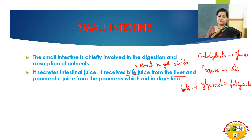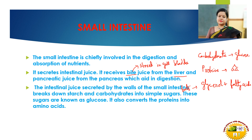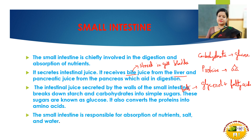Digestion is completed in the small intestine: carbohydrates turn into glucose, proteins into amino acids, and fats into glycerol and fatty acids. The intestinal juice secreted by the walls of the small intestine breaks down starch and carbohydrates into simple sugars known as glucose, and also converts proteins into amino acids. The small intestine is also responsible for absorption of nutrients, salts, and water, aided by the finger-like projections known as villi.